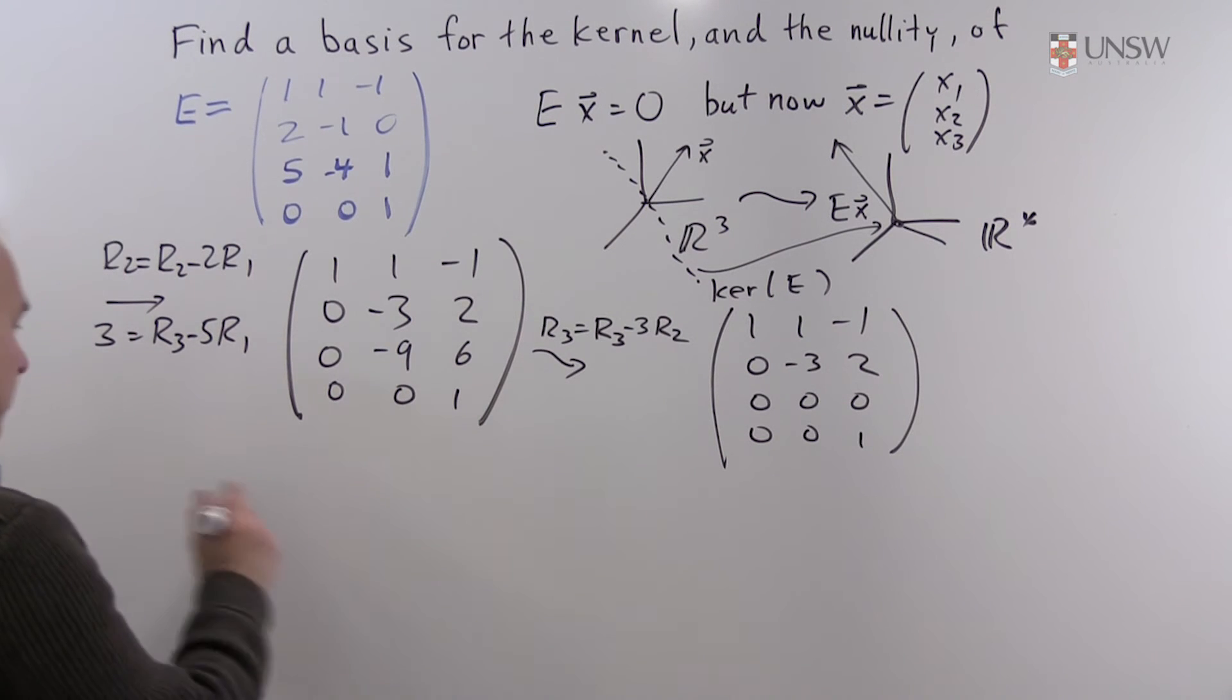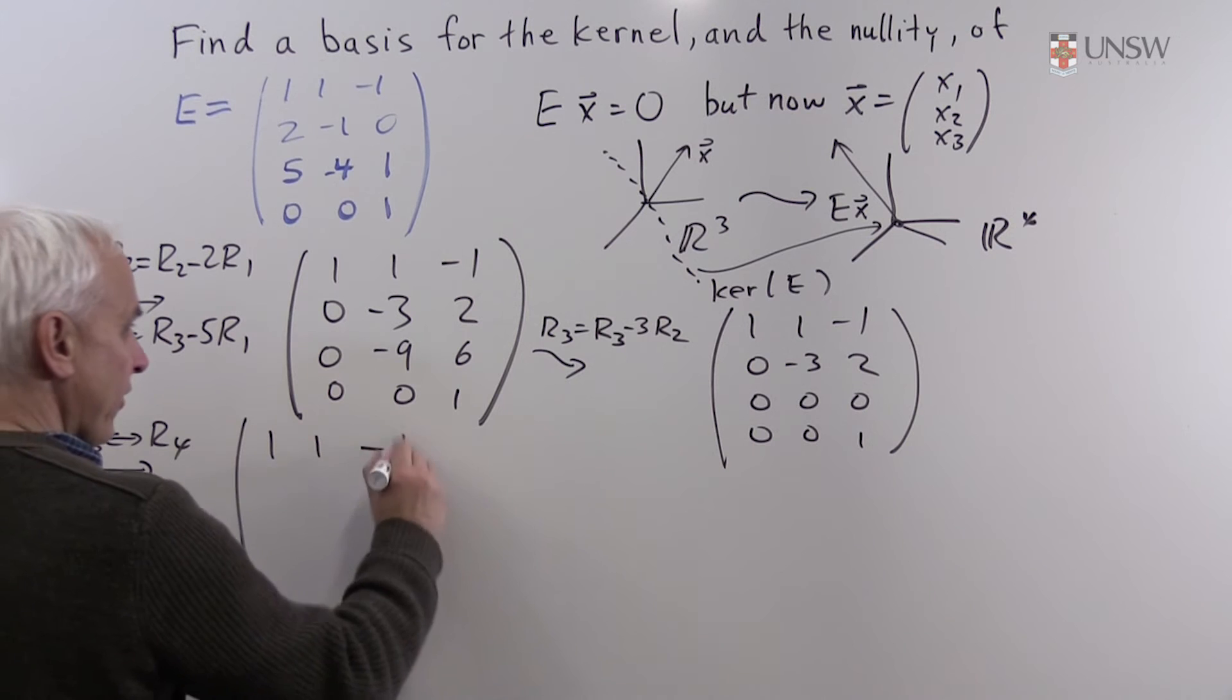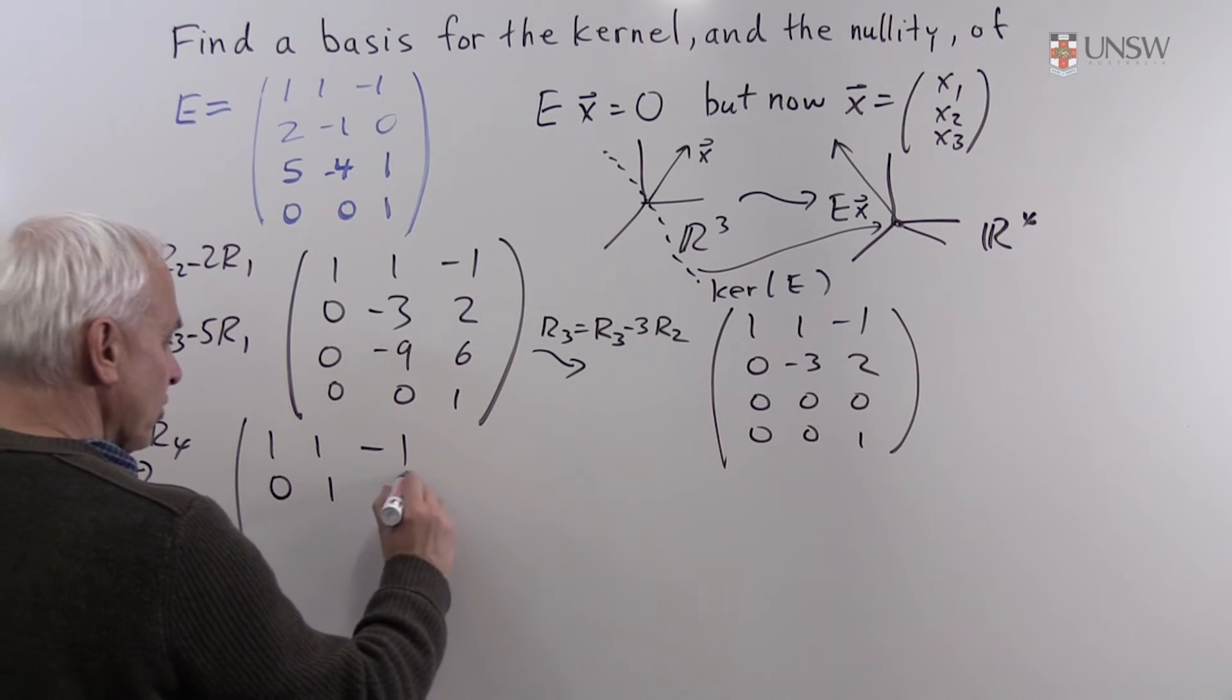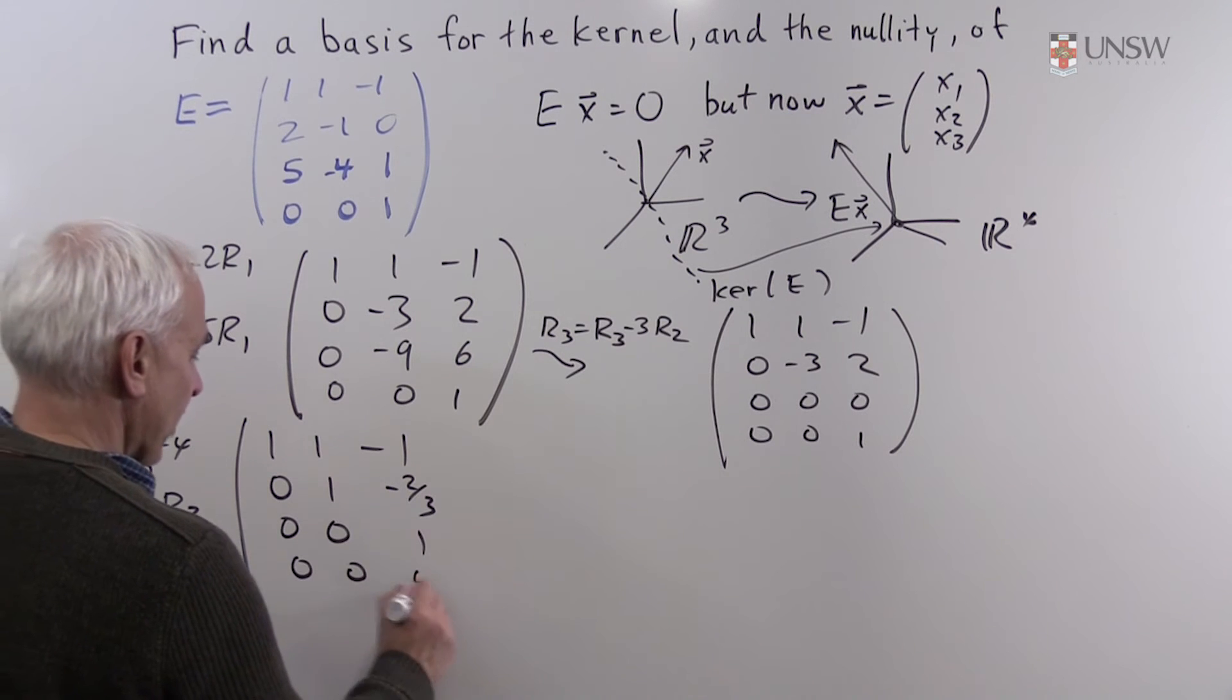And we can go over here. We can interchange row 3 and row 4. And we can also multiply row 2 by minus 1 third. That will give us 1, 1 minus 1, 0, 1 minus 2 thirds, 0, 0, 1. And the row of zeros is now at the bottom.